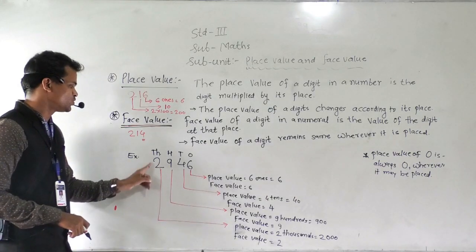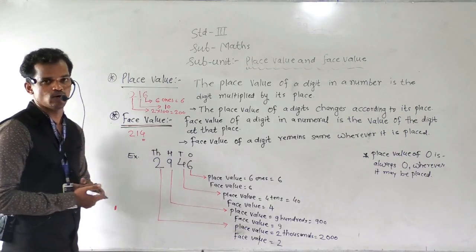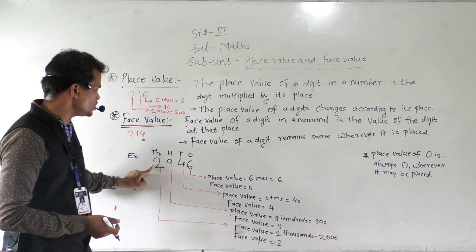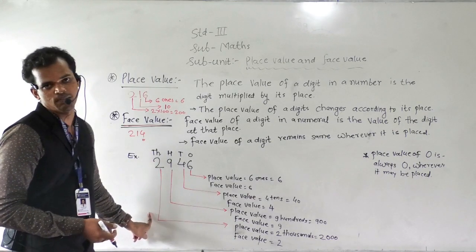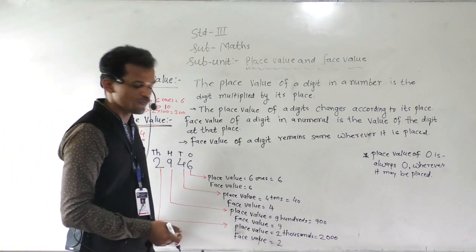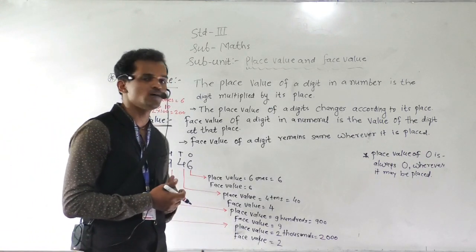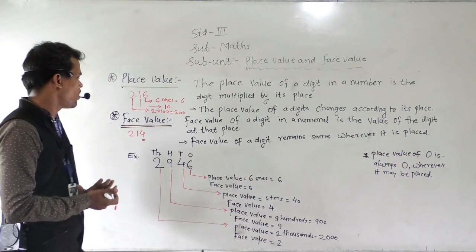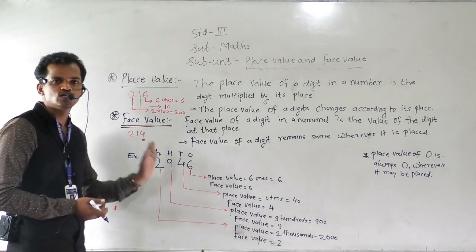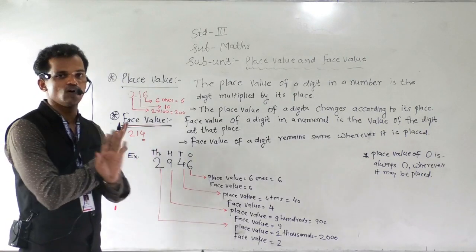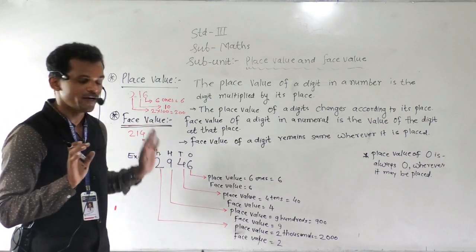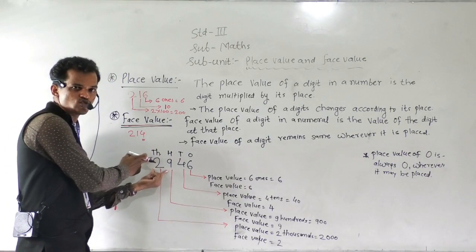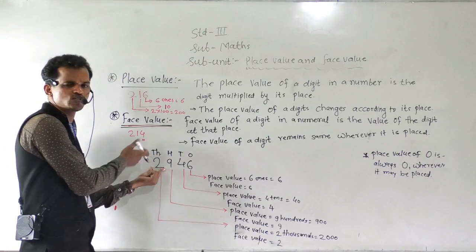Then 2 comes at the thousands place. So what will be the place value of this 2? 2 multiplied by 1000 is equal to 2000. And the face value of this 2 is 2, because it has not changed — it remains the same. So place value of this 2 is 2000 and face value is 2.